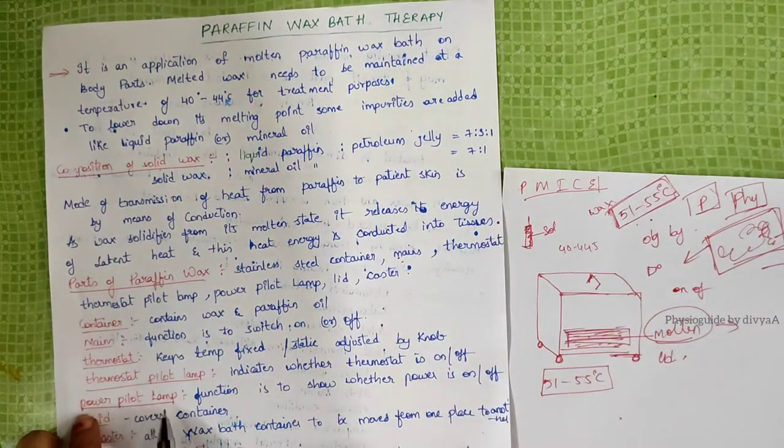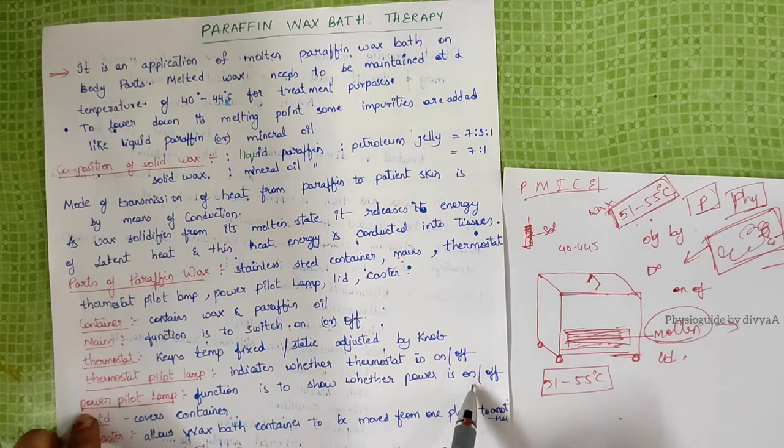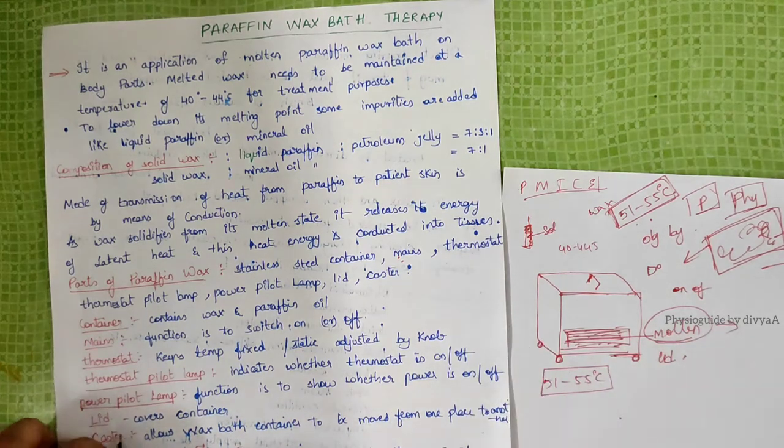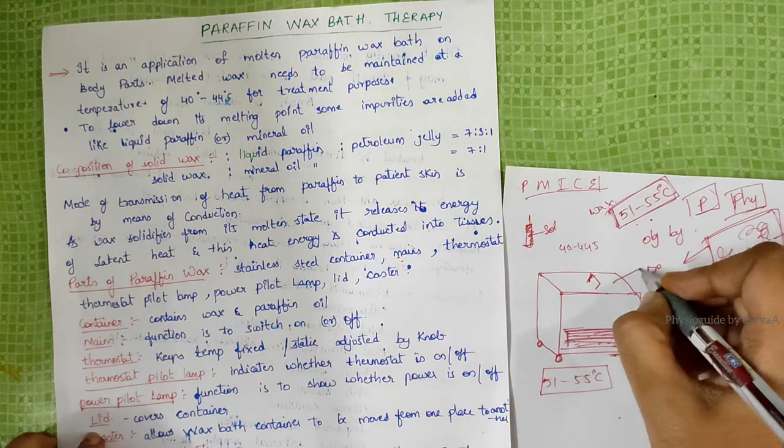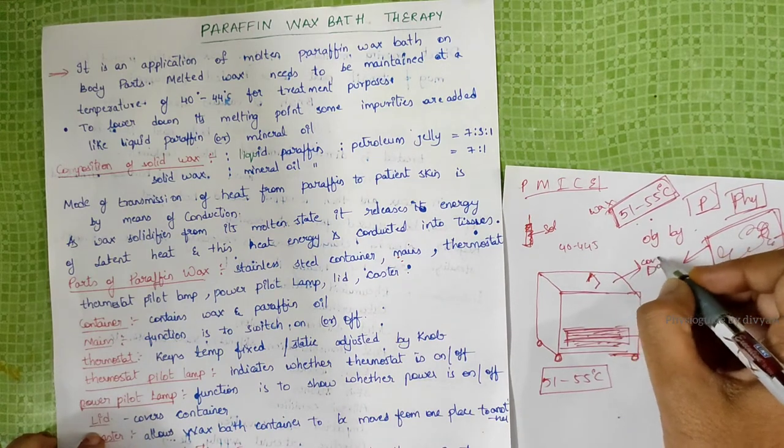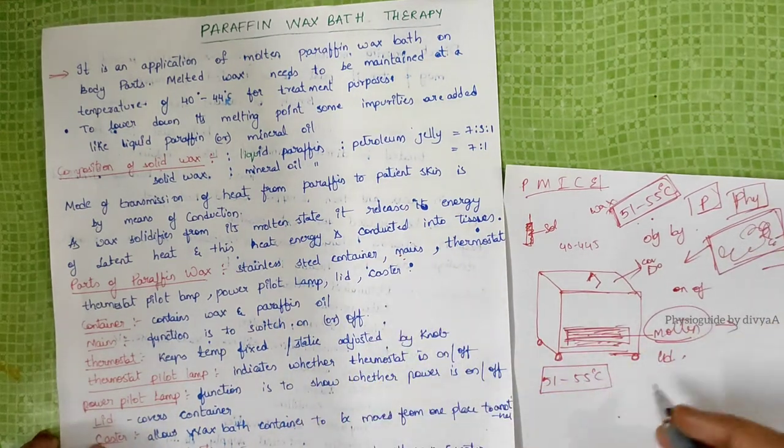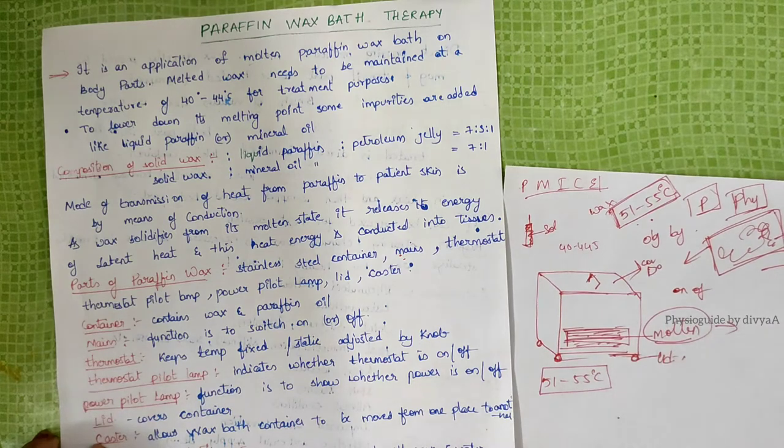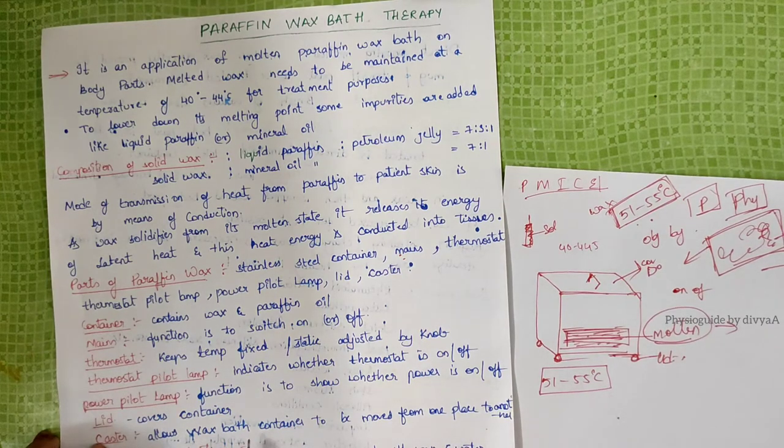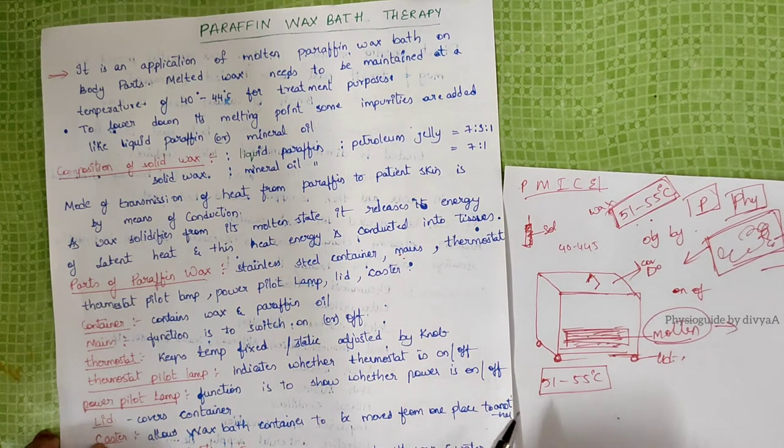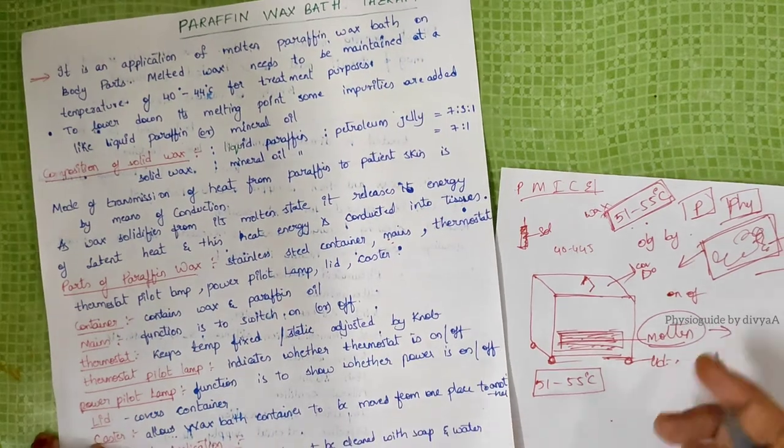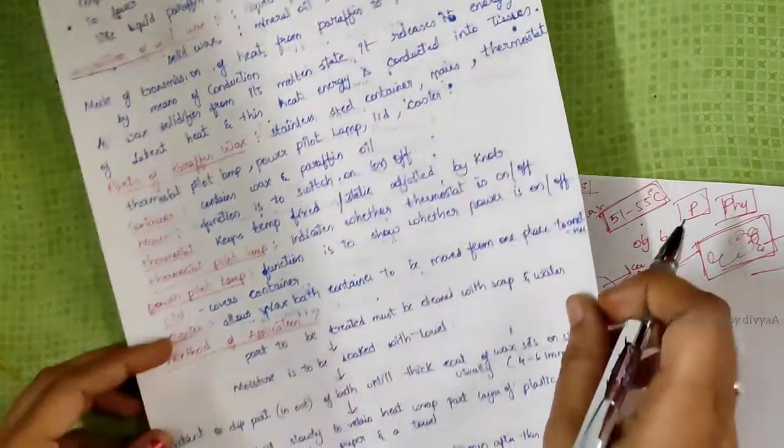Power pilot lamp function is to show whether power is on or off. Lid covers the container, and casters are the wheels that allow the wax bath container to be moved from one place to another. These are the parts of it.